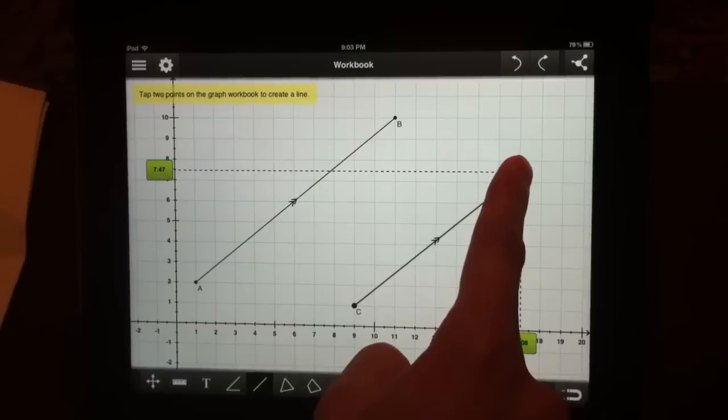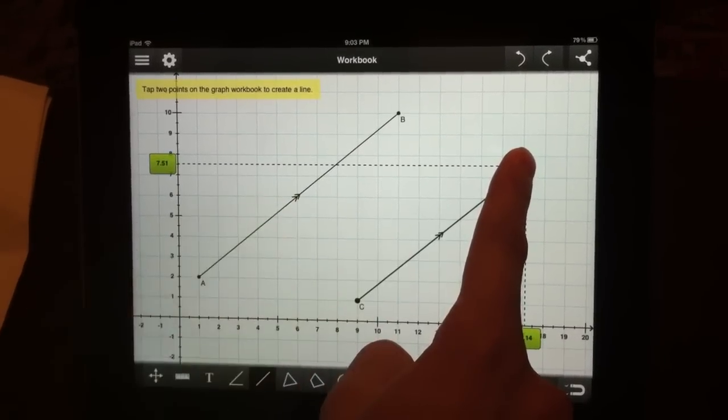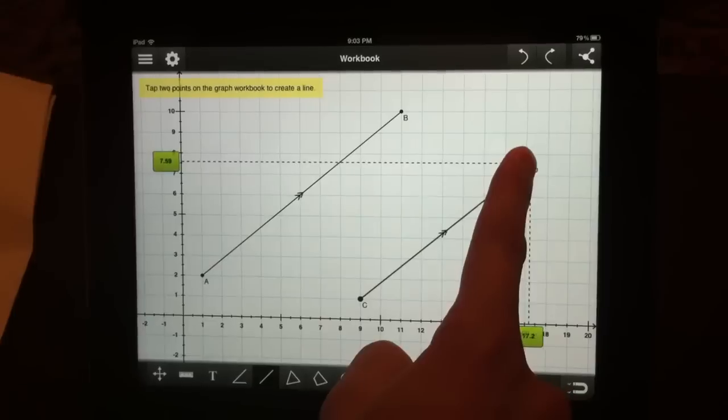As soon as you can see these two little marks on both lines, it means that the lines became parallel.